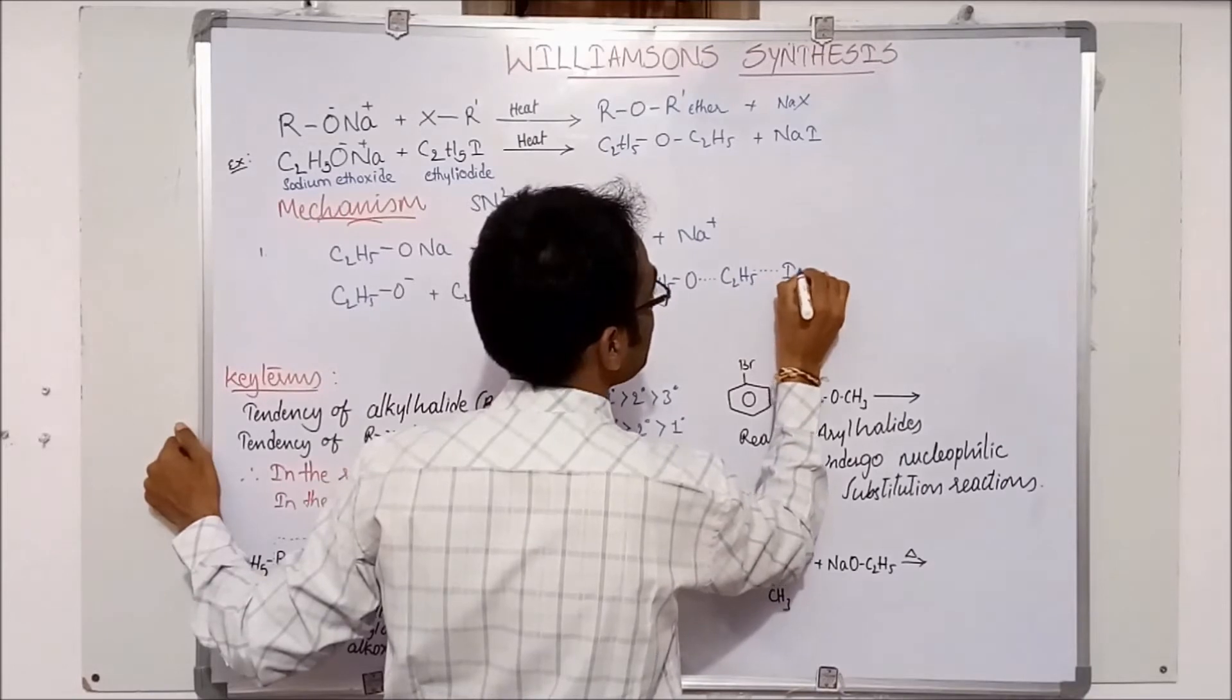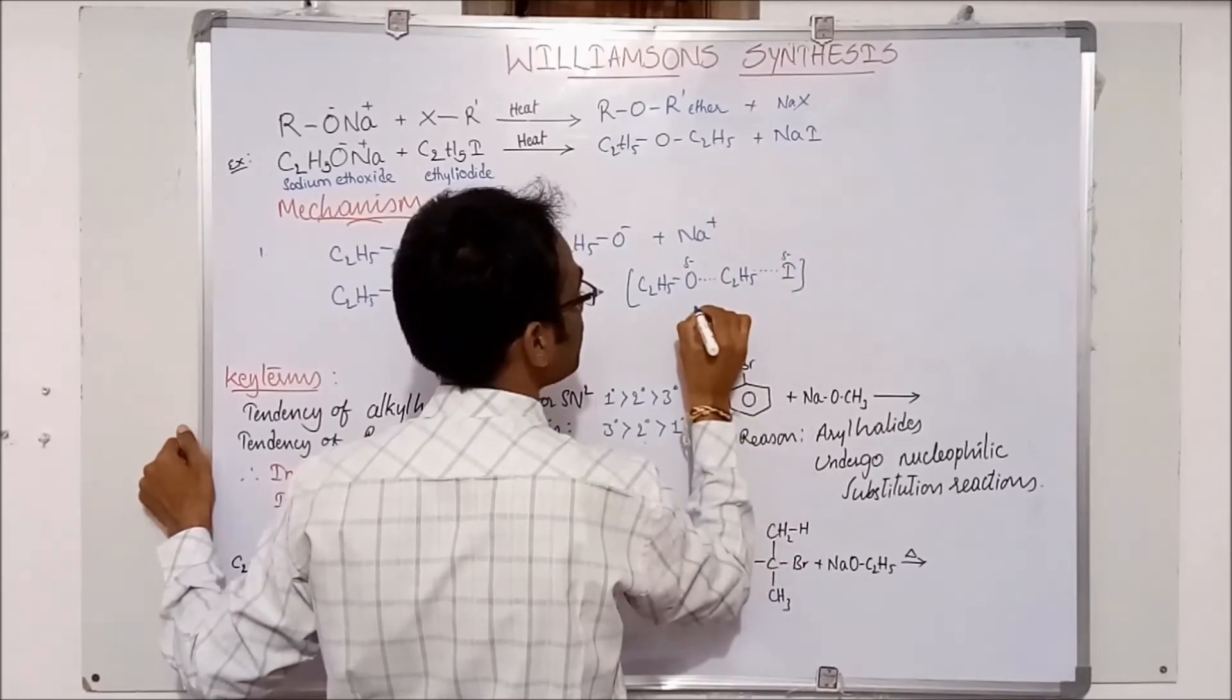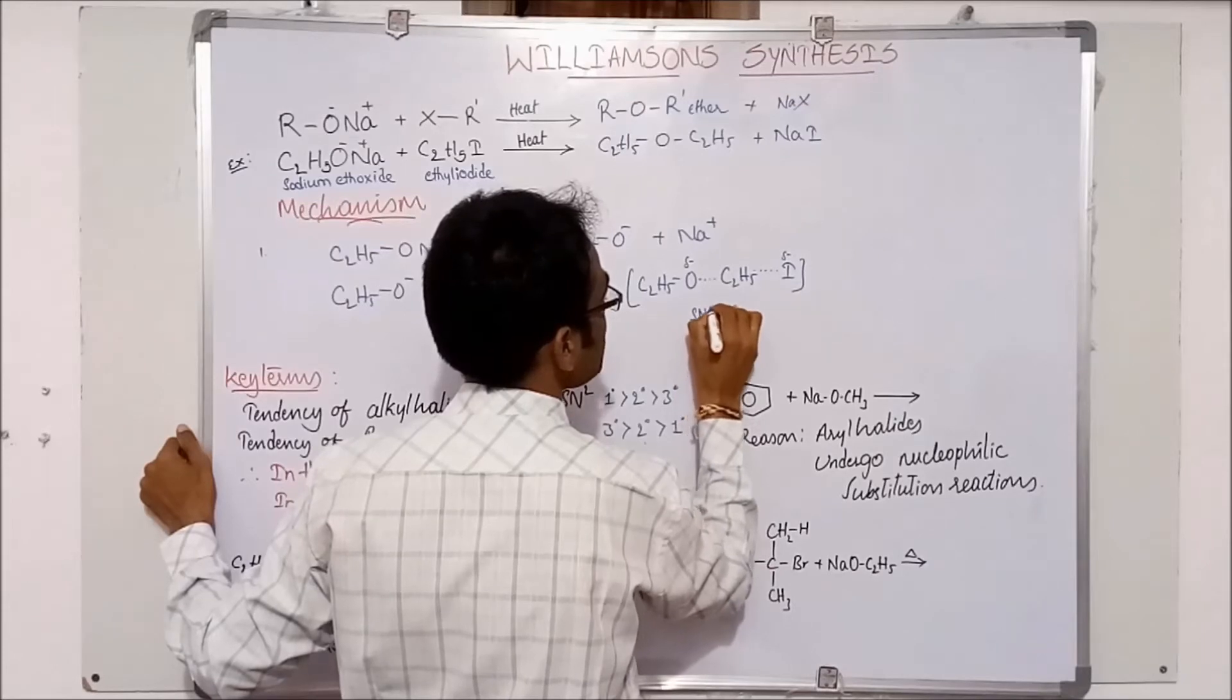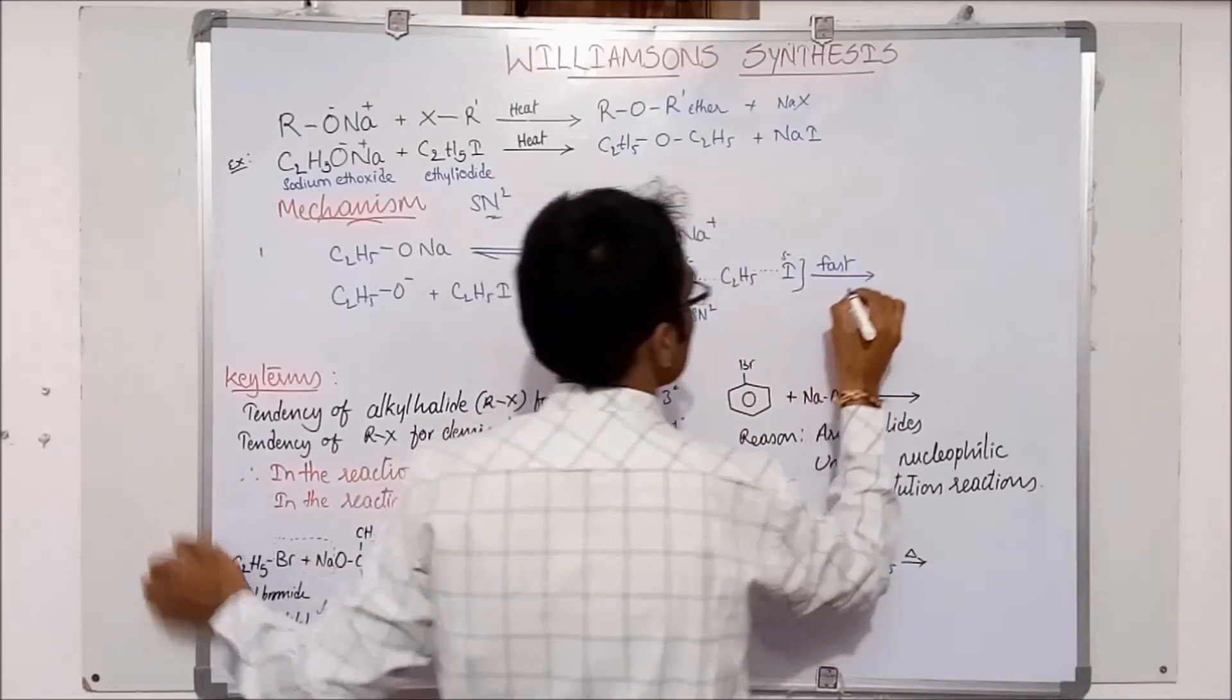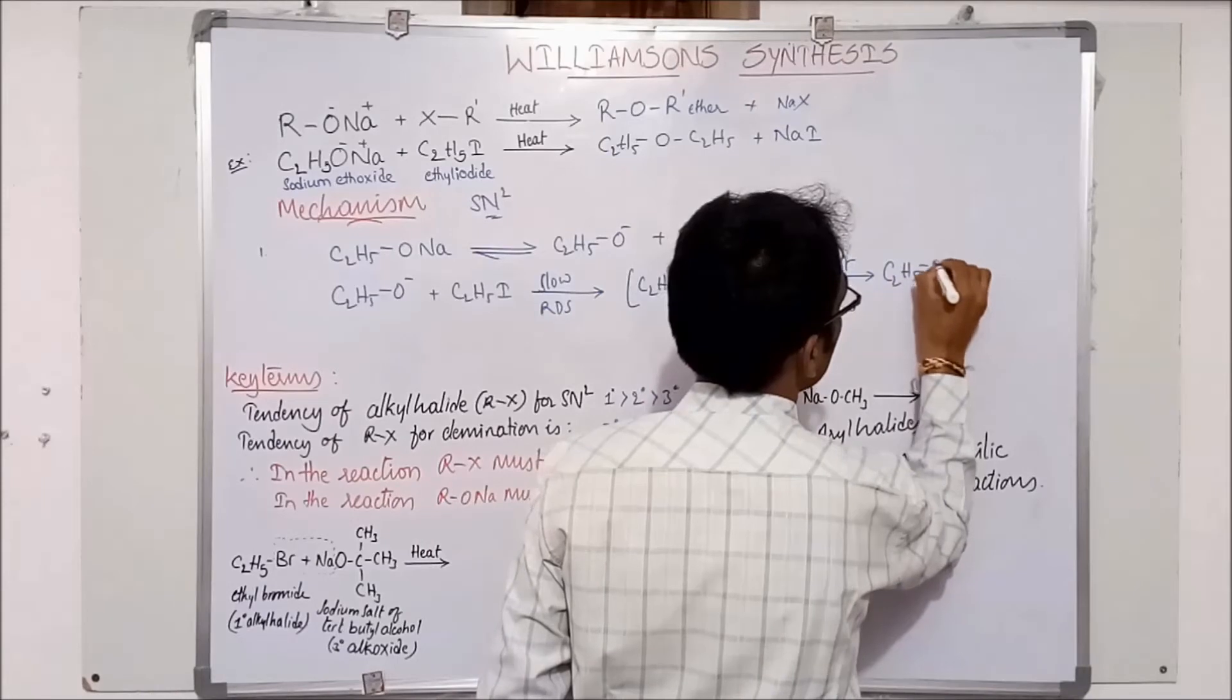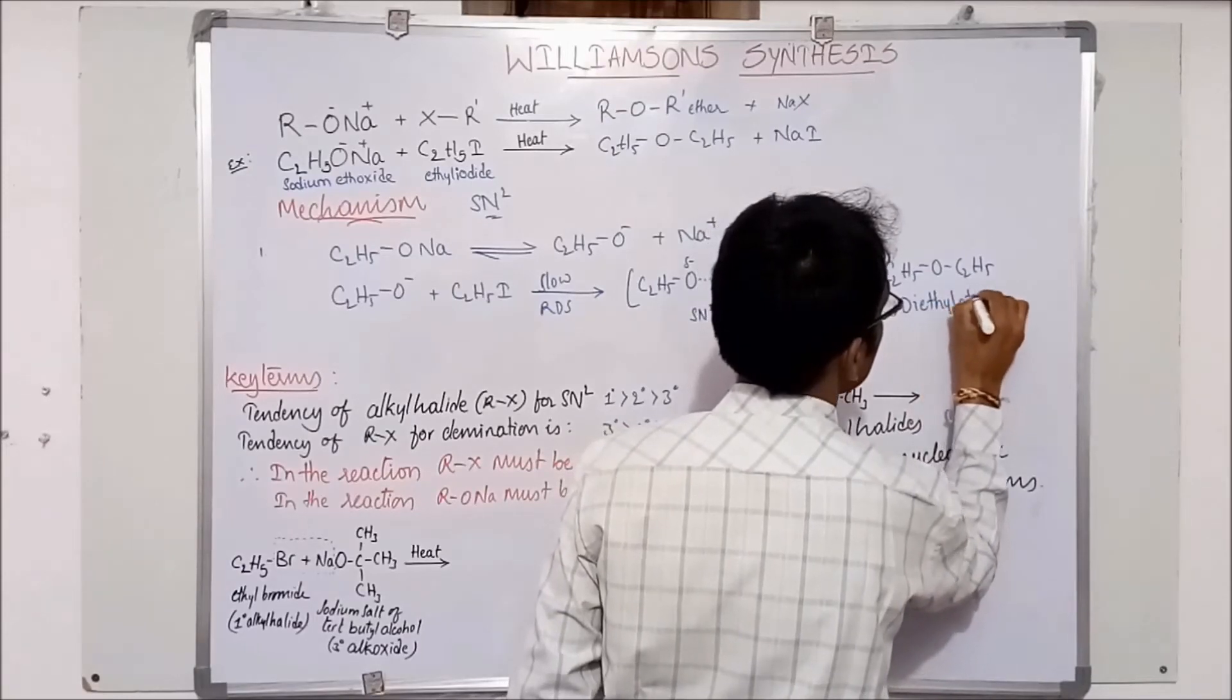So it is I here and here both the nucleophiles, that is O minus and I minus, both of them are in the transition state. So it follows SN2 mechanism and the other step is fast mechanism which follows the product C2H5O-C2H5. This is called as diethyl ether.